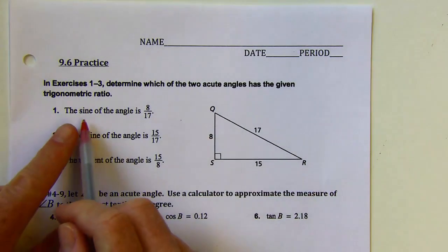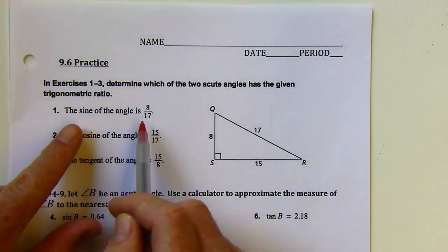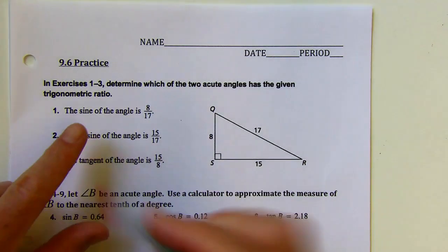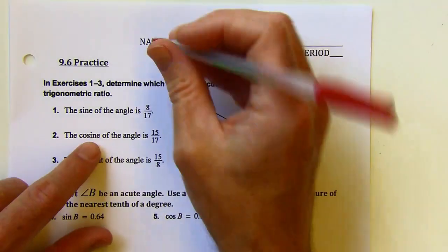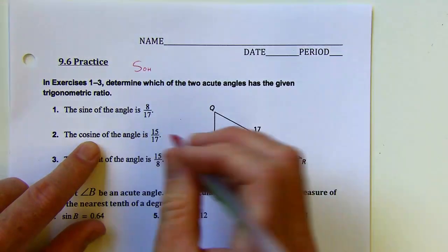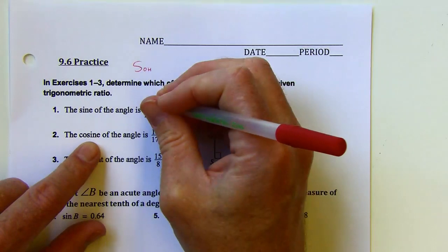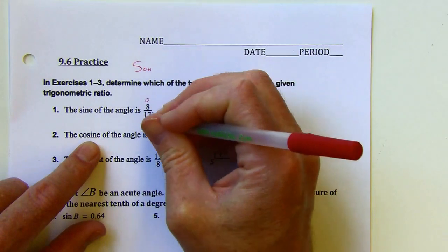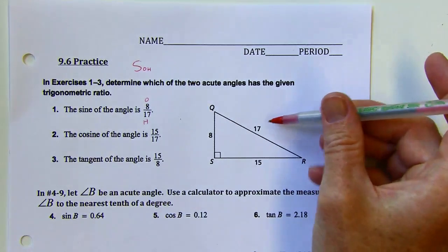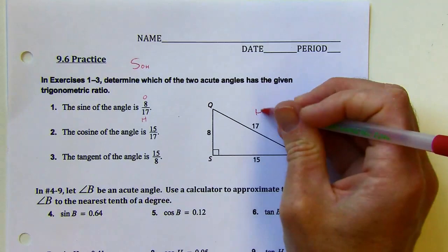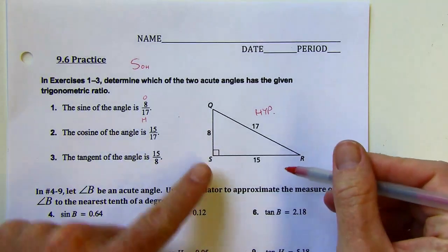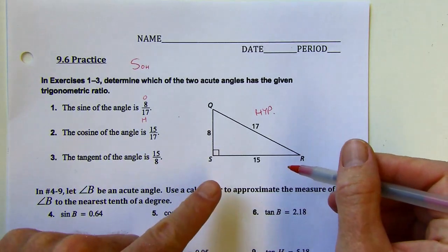This first one says the sine of the angle is 8 over 17. So I'm thinking SOHCAHTOA — sine is opposite over hypotenuse. This would be my opposite, this would be my hypotenuse. The hypotenuse is always going to be the 17.